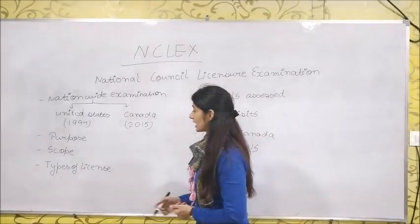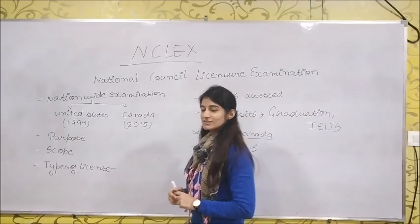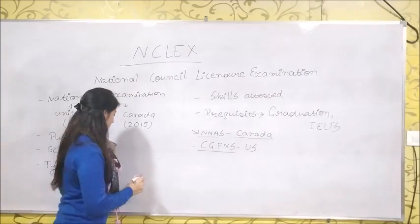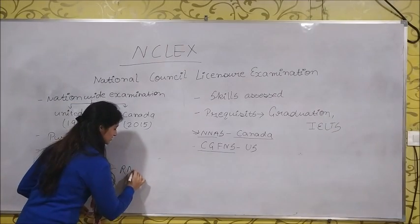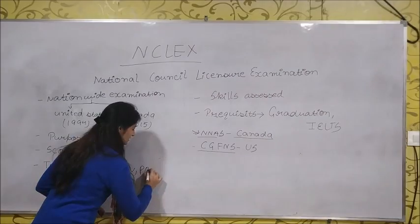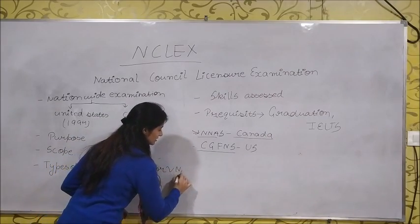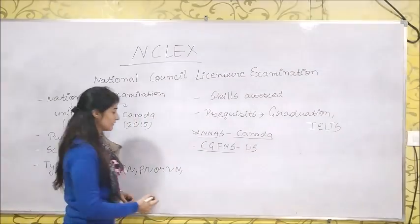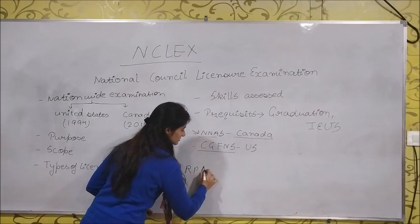There are different types of licenses. Basically, the license for this test is divided into three types. First is registered nurse, next is practical nurse or we can say vocational nurse, and you can also apply for registered psychiatric nurse.